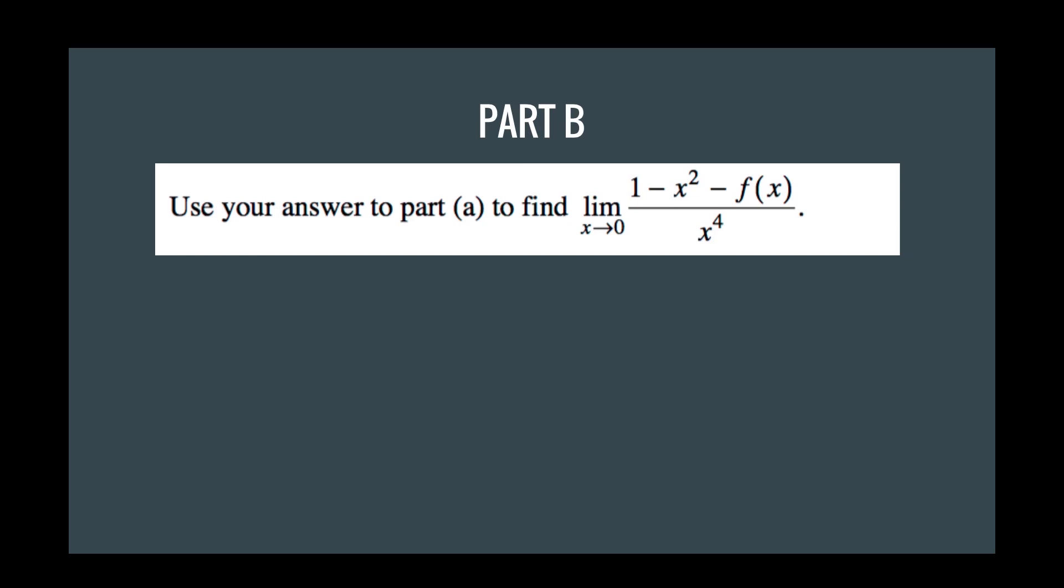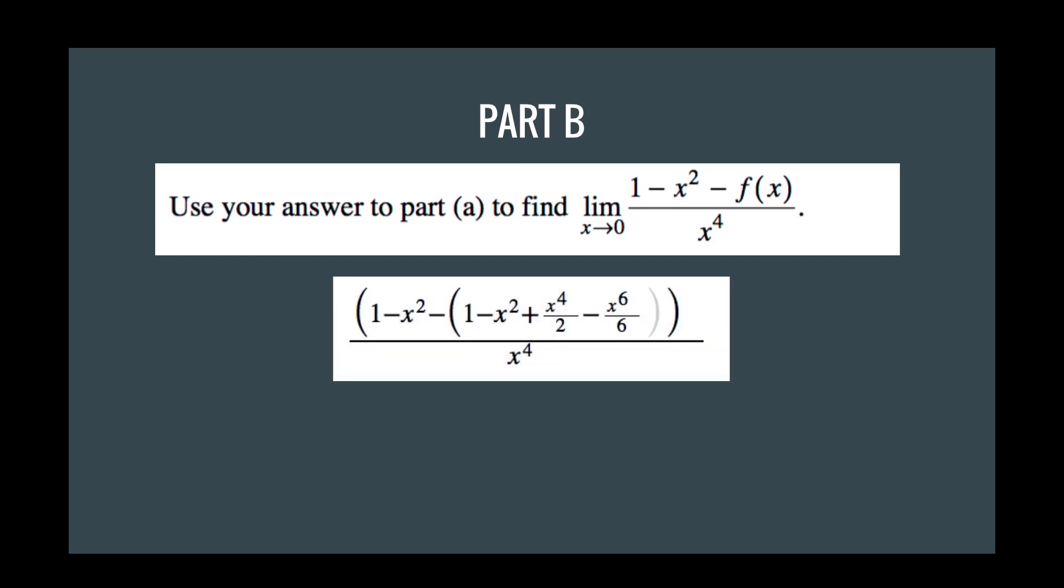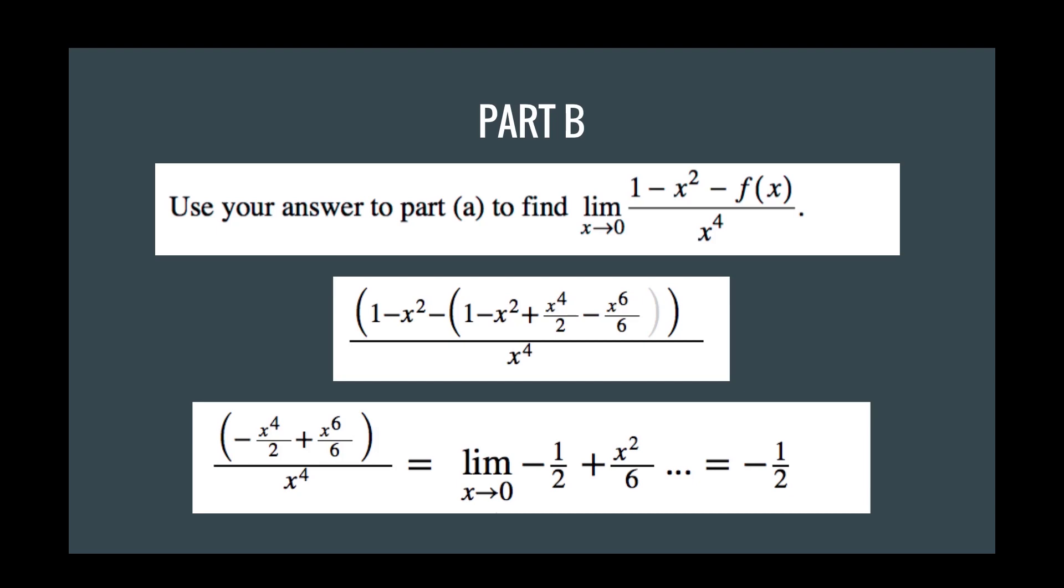Now, part B is a little bit harder. It just wants us to find the limit as x goes to zero of 1 minus x squared minus f of x over x to the fourth power. So a trick that we can do here is, you know how we found the first four terms of f of x? We can just plug that directly into there and subtract and do some mathematics. And we'll get that we're remaining with negative x to the fourth over 2 plus x to the sixth over 6 over x to the fourth and so on. And then the x to the fourth cancel out and you get negative 1 half plus x squared over 6 and so on.